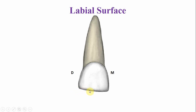Even in the newly erupted teeth, the incisal surface has no mamelons. This is the mesio-incisal angle; it is sharp, while the disto-incisal angle is more rounded. The central incisor has a single root which tapers towards the root apex.